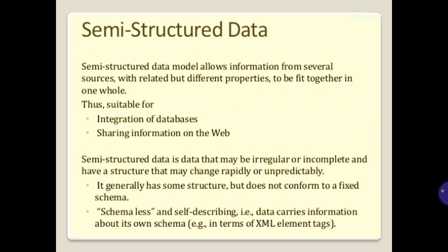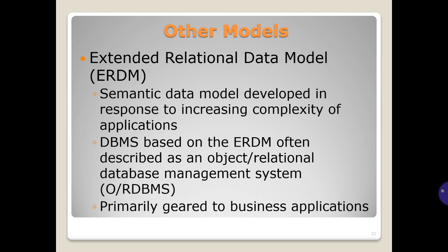Semi-structured data models allow information from several sources with related but different properties to be combined, making them suitable for database integration and sharing information on the web. Semi-structured data may be irregular or incomplete, with a structure that may change rapidly or sporadically. It generally has some structure but does not conform to a fixed schema — it is schemeless and self-describing, carrying information about its own schema within each XML element.